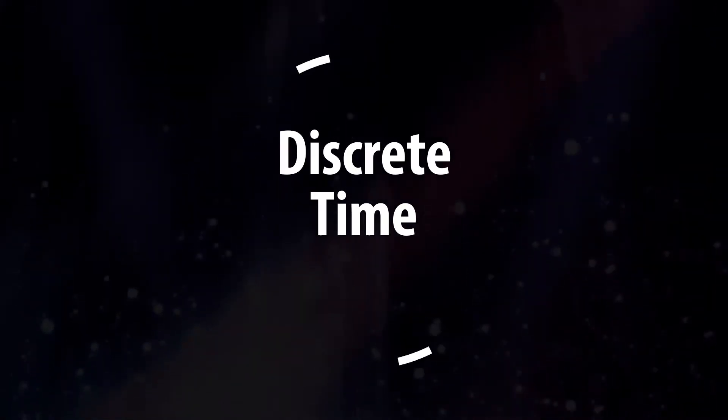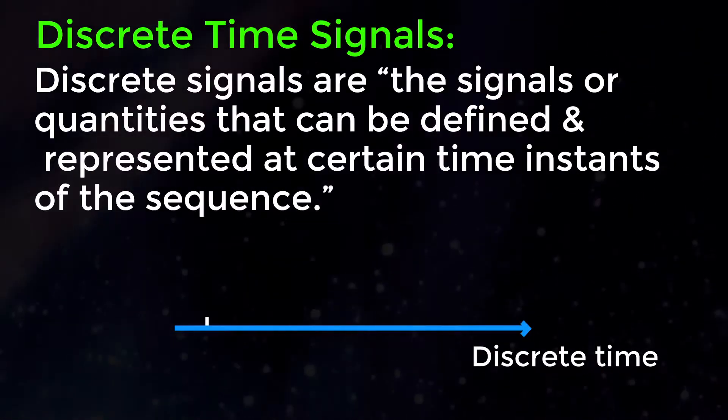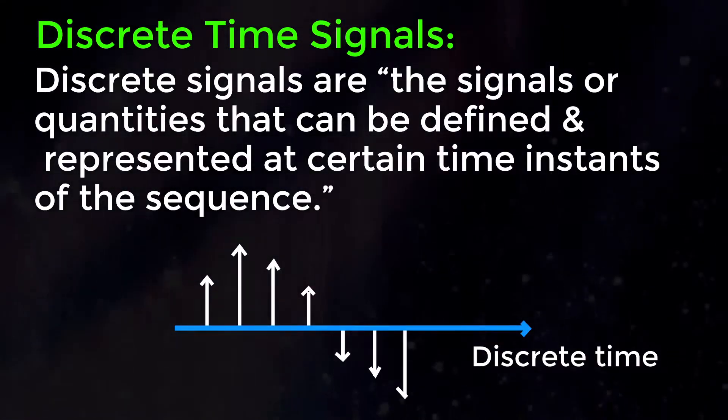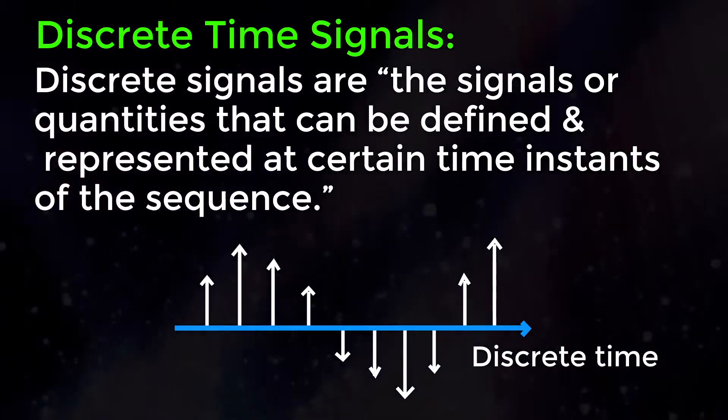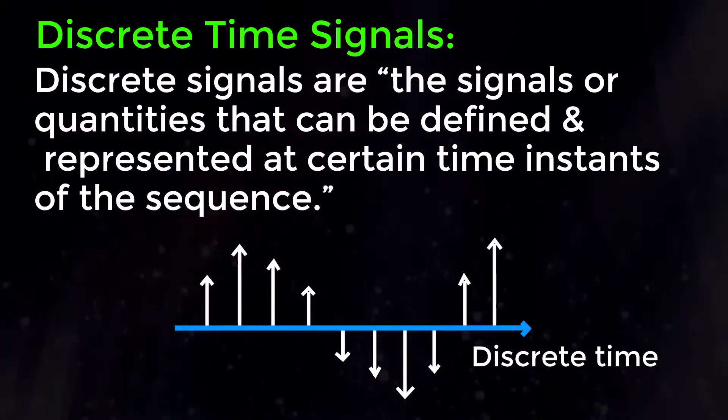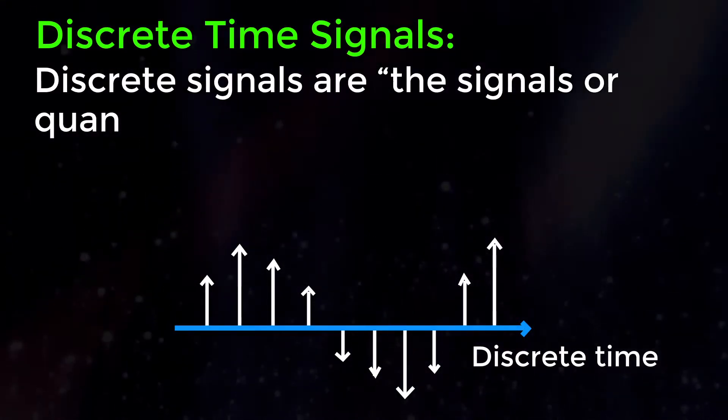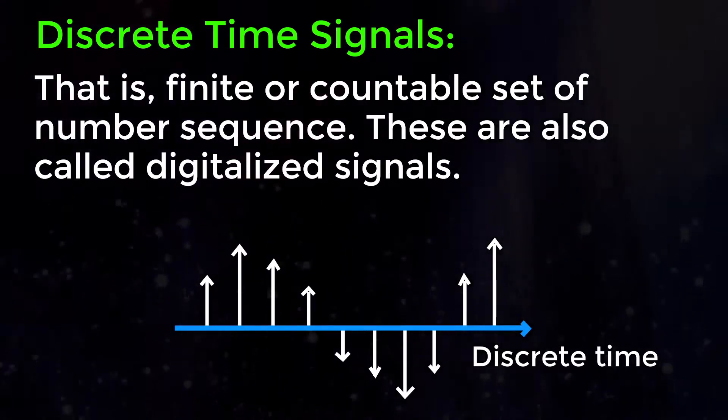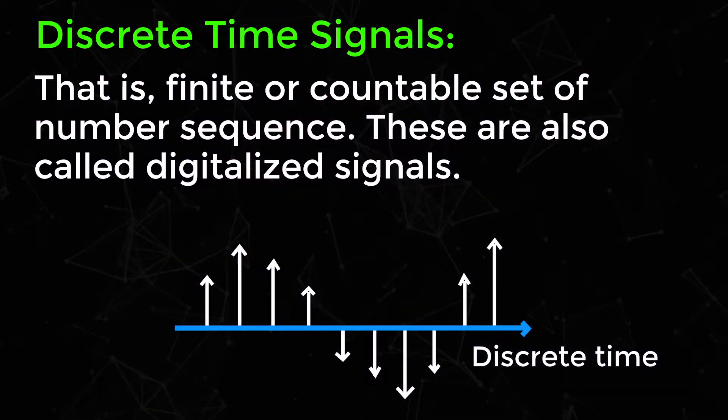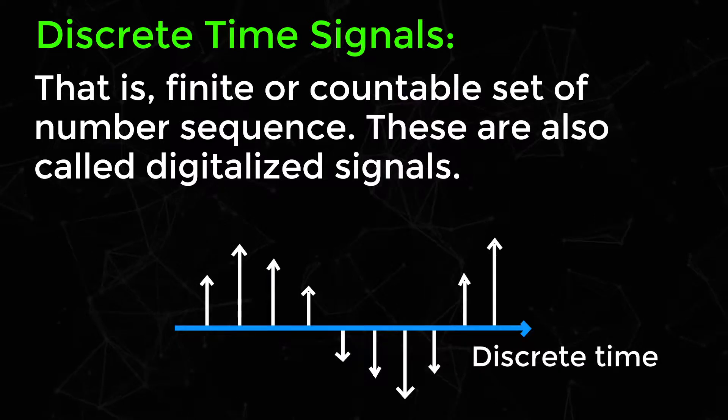Discrete time signals. Discrete signals are the signals or quantities that can be defined and represented at certain time instances of the sequence. This is a finite or countable set of number sequence. These are called digitized signals.